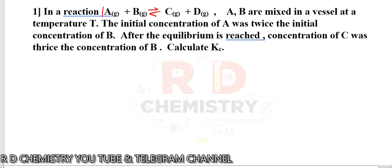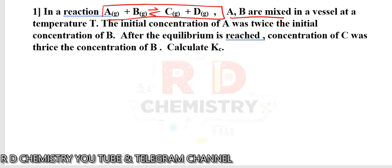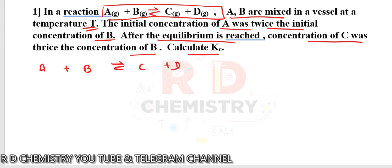Worked example: The reaction A + B giving C + D, all gases, are mixed in a vessel at constant temperature T. The initial concentration of A was twice the concentration of B. At equilibrium, the concentration of C was thrice the concentration of B. Calculate Kc. Let's write the equation: A + B ⇌ C + D, all gases, and set up three rows for initial, change, and equilibrium concentrations.